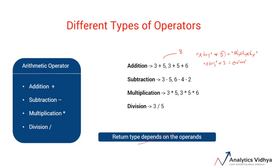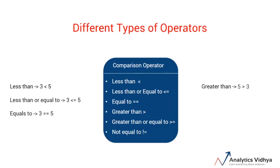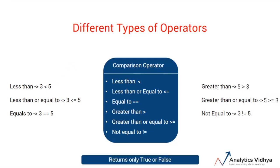Now let's move on to comparison operators. There are different kinds of comparison operators like less than, less than or equal to, equals to, greater than, greater than or equal to, and not equal to. These comparison operators return an output based on the comparison. The key thing to note about comparison operators is they always return a true or false value. For example, when we check whether 3 is less than 5, it will return true. And if we check whether 3 is greater than 5, it will return false.